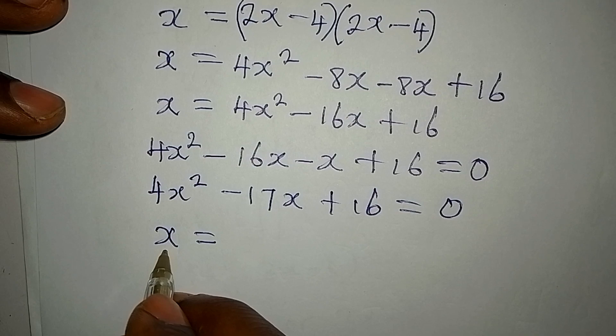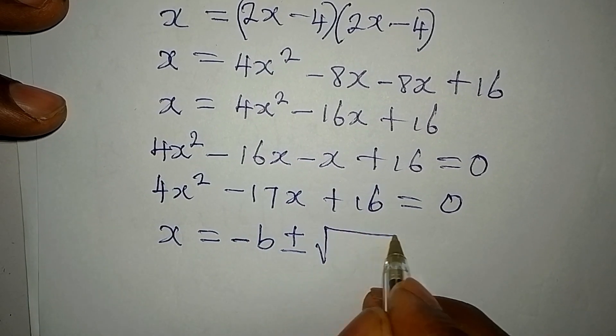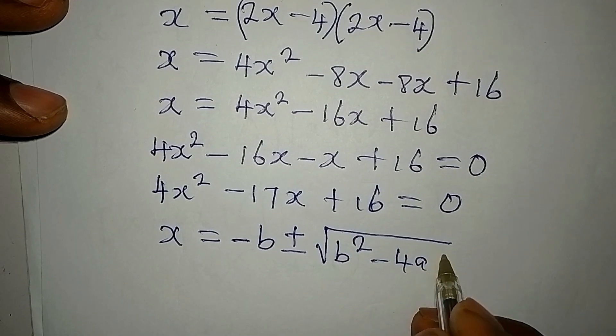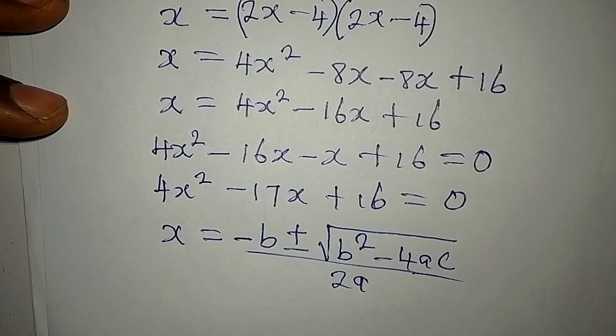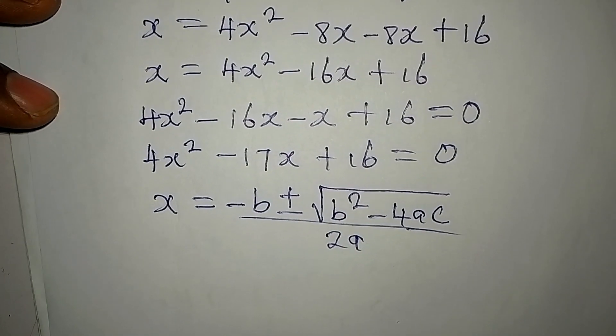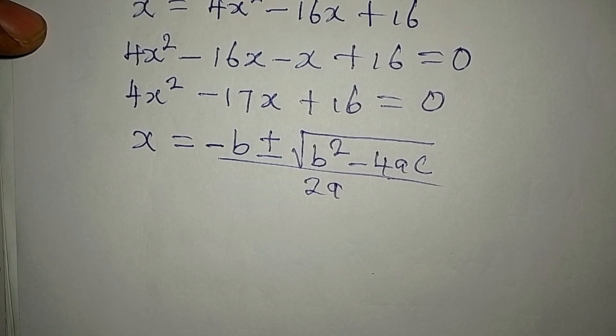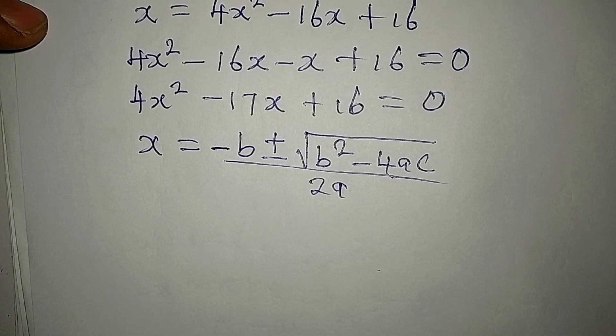The formula is here. We have x to be equal to minus b plus or minus square root of b squared minus 4ac all over 2a. It is one thing to know the formula, and then it is another thing to know what the a, b, c stands for.